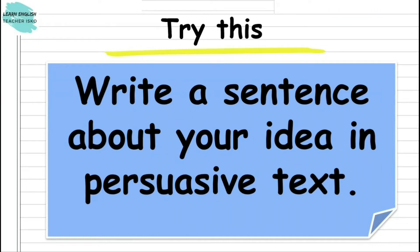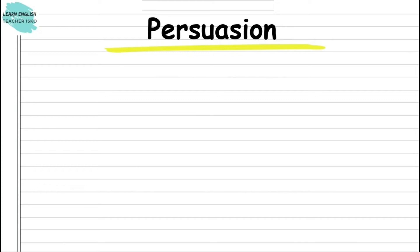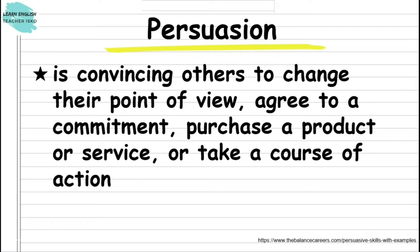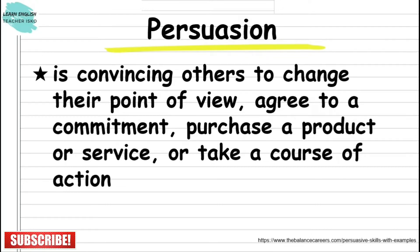Thank you so much for your answers. First, let us define the term persuasion. Persuasion is convincing others to change their point of view, agree to a commitment, purchase a product or service, or take a course of action. In other words, persuasion is the act of convincing someone of something, or the means of convincing someone to do something. Let us consider the example statements in the succeeding slides.